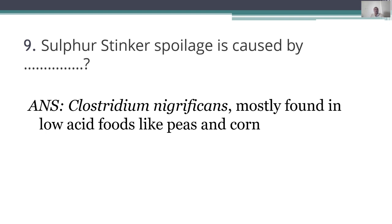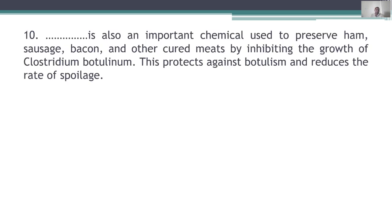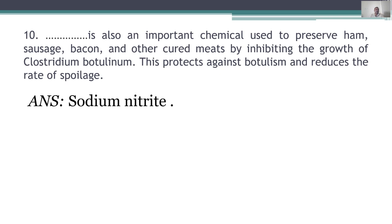Tenth question: what important chemical is used to preserve ham, sausage, bacon, and other cured meats by inhibiting growth of Clostridium botulinum? Sodium nitrate is used to prevent the growth of Clostridium botulinum spores, protecting against botulism and reducing the rate of spoilage.